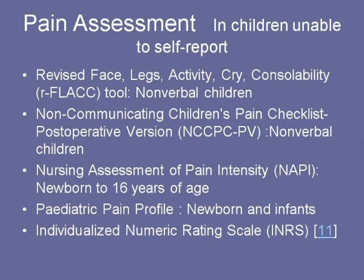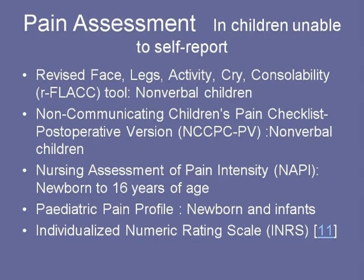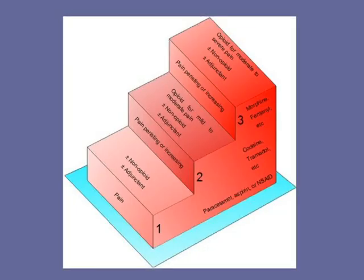For a pharmacologic approach to pain, we use the WHO analgesic ladder — which was initially designed for children — based on pain severity. We want to avoid NSAIDs in cancer and HIV disease. Agonist-antagonist opioids we generally avoid with children. Meperidine is acceptable for one dose but we want to avoid it for prolonged use. For dose-limiting toxicity, we use adjuvants to widen the therapeutic window and reduce the dose, or rotate the opioid.